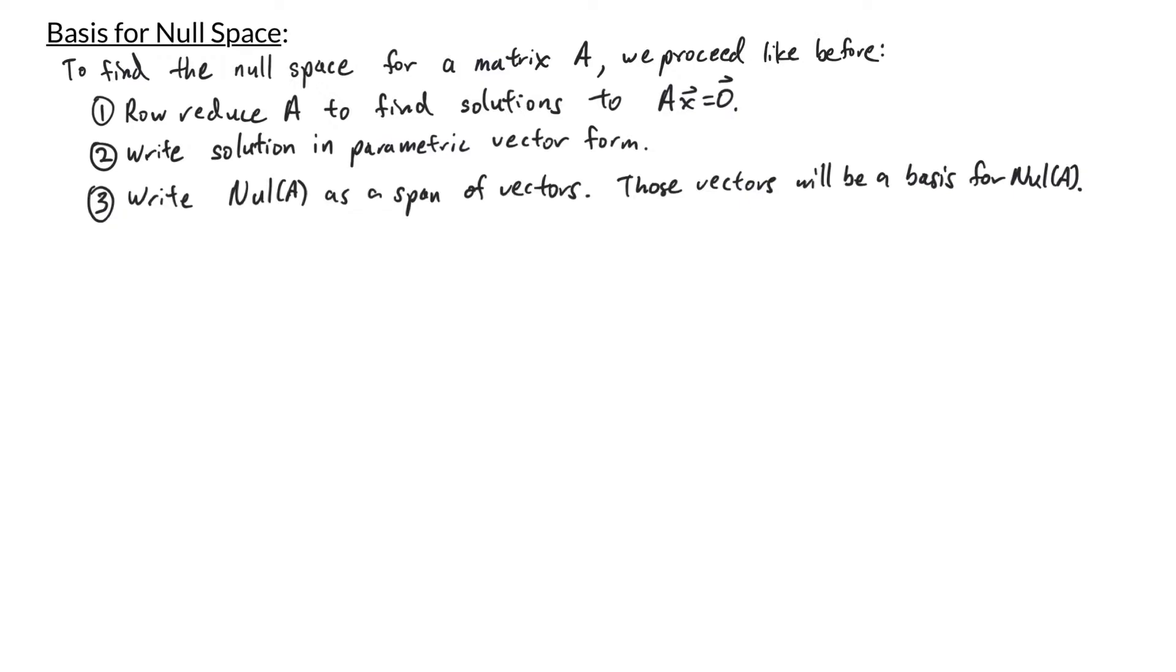So let's look at this example. In this example, we have the matrix A with entries 1, 0, negative 3, 1, 3, negative 1, 1, 5, 0, negative 5, 0, 2, 4, 1, negative 6. And we're asked to find a basis for the null space of A.